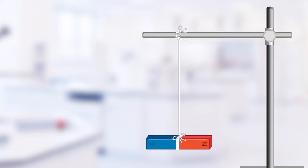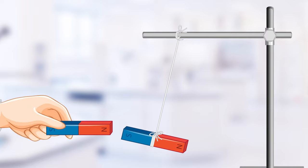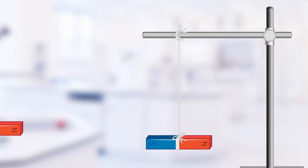Now let's observe what happens when the north pole of the bar magnet is brought closer to the south pole of the hanging magnet. Look! The hanging magnet moves closer! They attract each other!